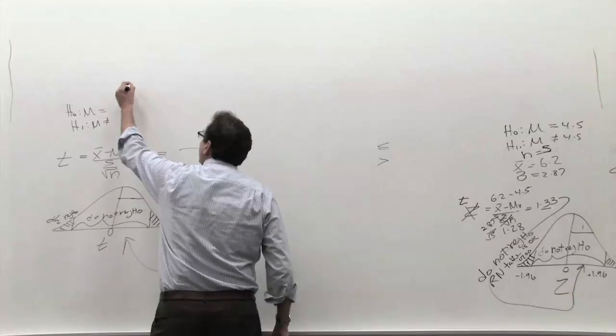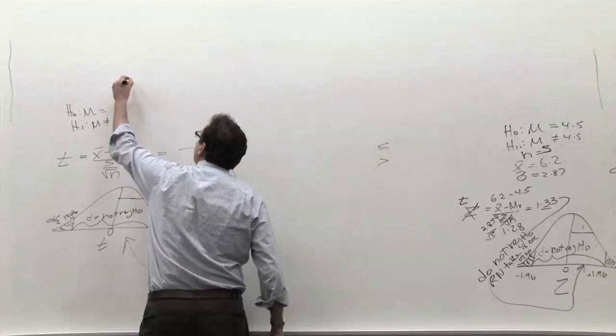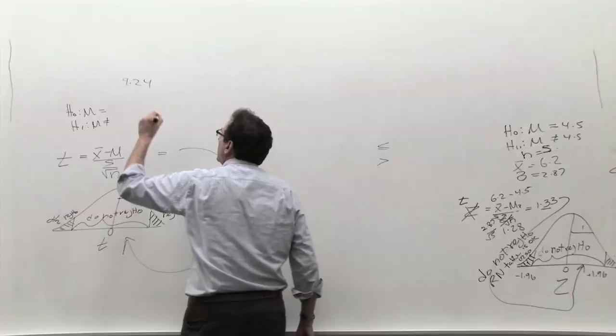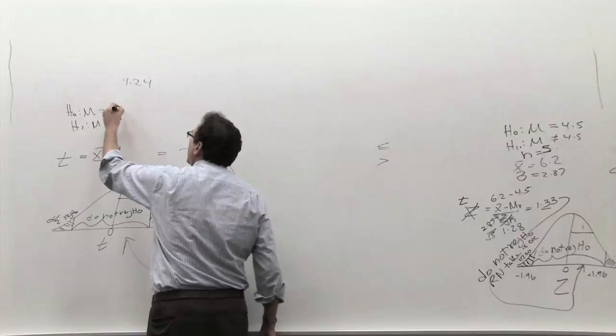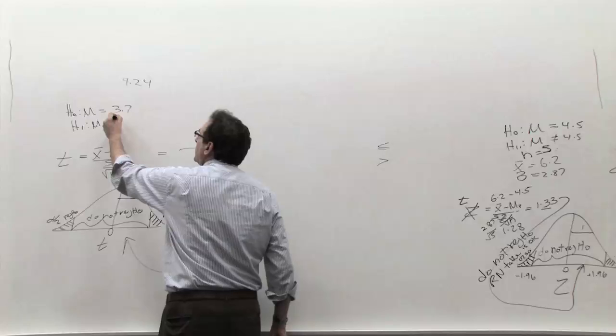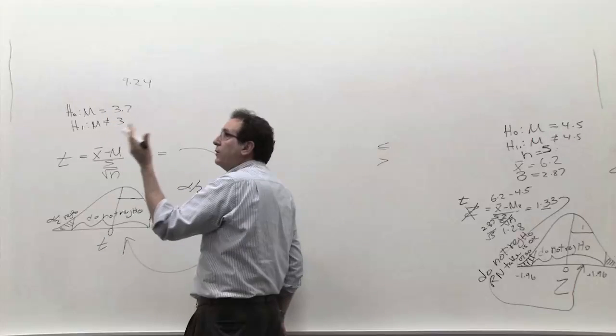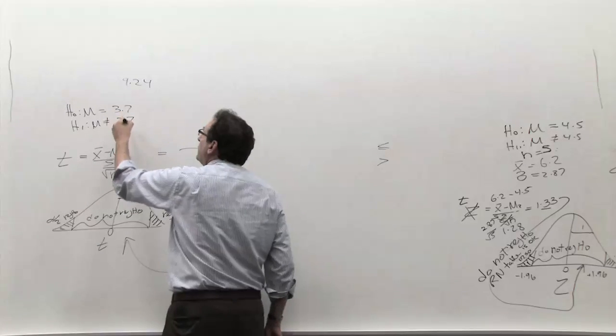Homework number 9.24. We're told that the ideal value is 3.7. And the question is, do we change from 3.7? Not higher, not lower, no direction, just different than 3.7.